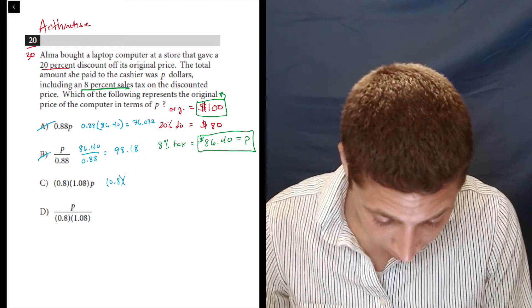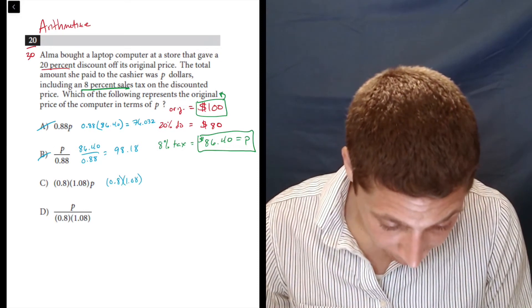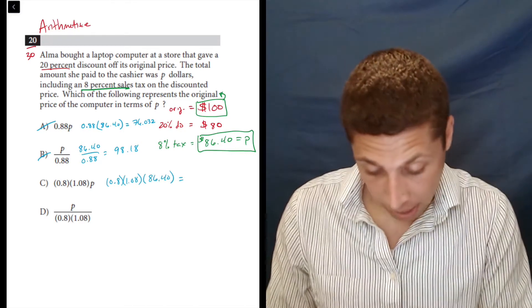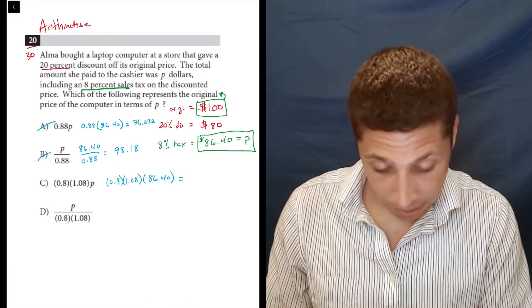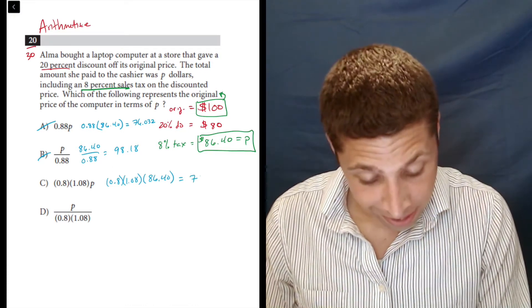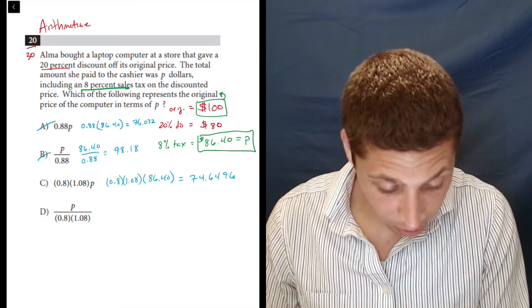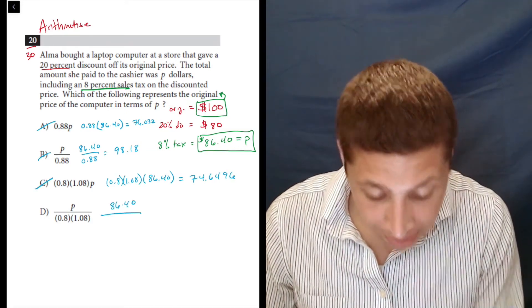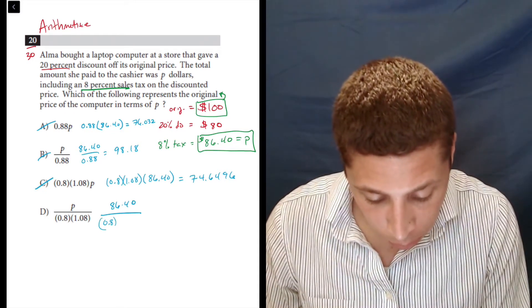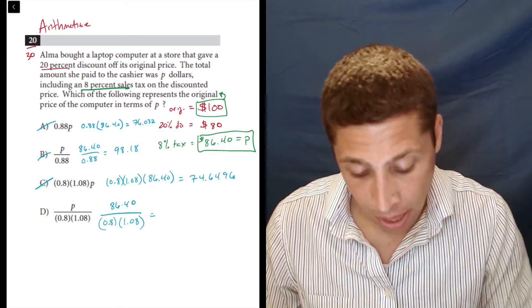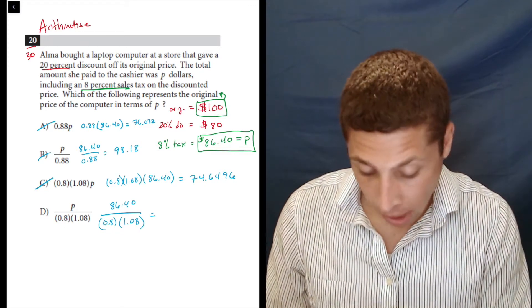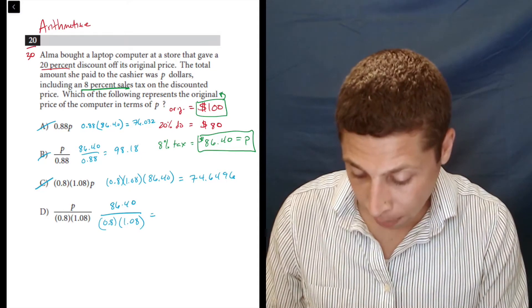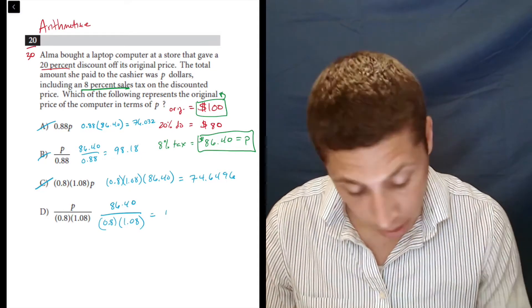If I do 0.8 times 1.08 times 86.40 is 74.6496, not 100. And that's the answer that most people pick because that's very logical when you're dealing with percentages that we would do all this multiplication, but it doesn't work here. And it's because we're kind of reversing the way that percentages work. So doing this last step, and I got to be careful that I do parentheses here, I do get 100. And I do have proof that choice D is right.